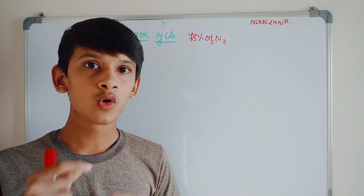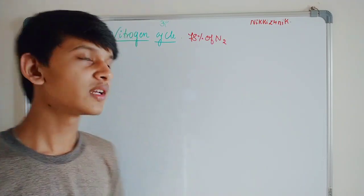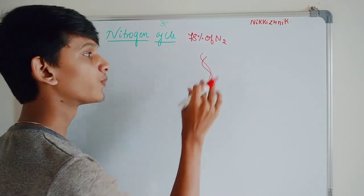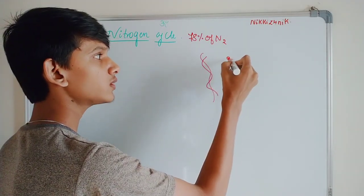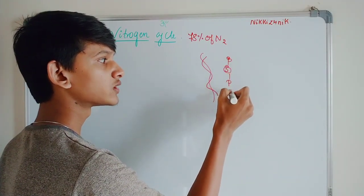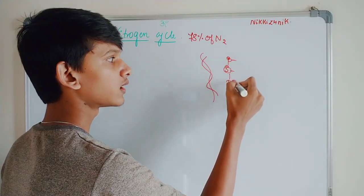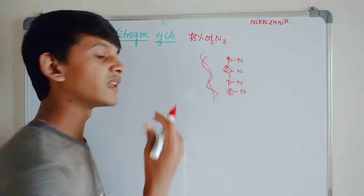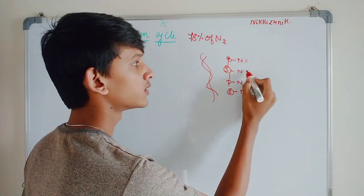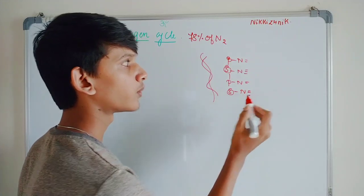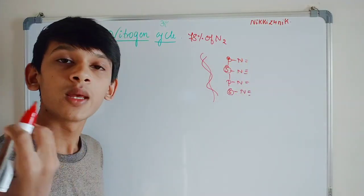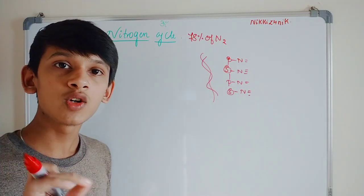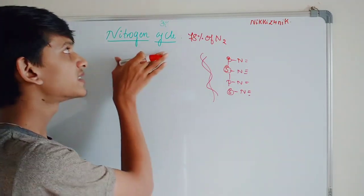Think in detail about DNA. DNA has a double helical structure with a phosphate group and a sugar group. In the nitrogenous bases — purines and pyrimidines — Nitrogen forms double bonds and triple bonds. So the main component of DNA's nitrogenous bases is Nitrogen.